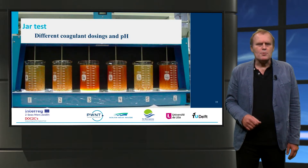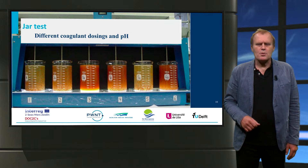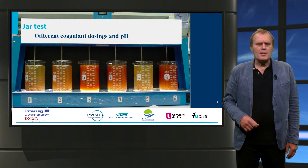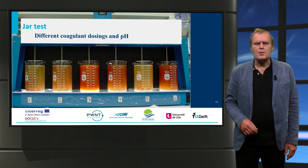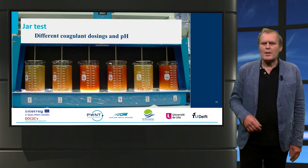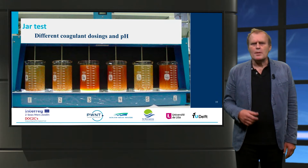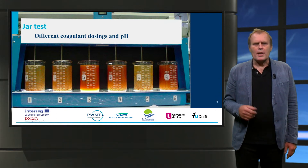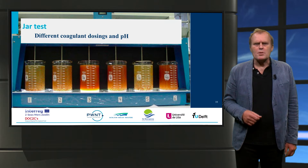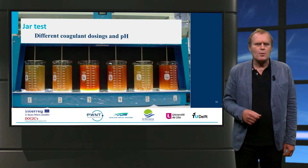An important way to investigate coagulation is the so-called JAR test. In this test, the coagulation and flocculation process is simulated. You can observe the flocs in the jars and, for instance, vary the pH and the coagulant dose in order to obtain the optimal pH and dose.